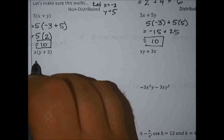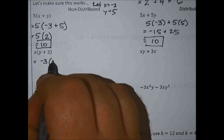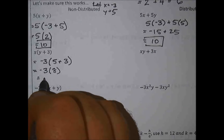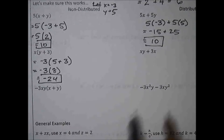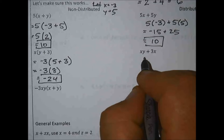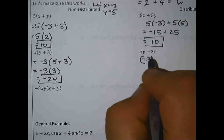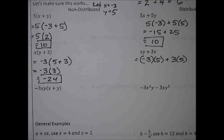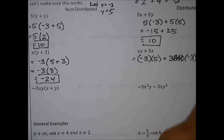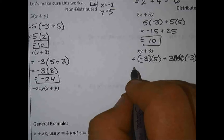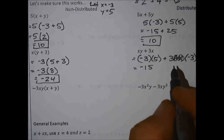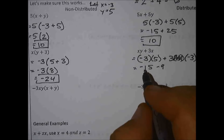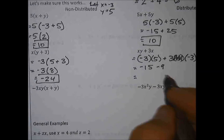Here we have x on the outside — I know what x is so I just replace it. x is negative 3 and (y + 3): y is 5, so that's 5 plus 3 which is 8. Negative 3 times 8 is negative 24. On the distributed side, I have x times y plus 3 times x — that's negative 3 times 5 plus 3 times negative 3. Negative 3 times 5 is negative 15, and 3 times negative 3 is negative 9.